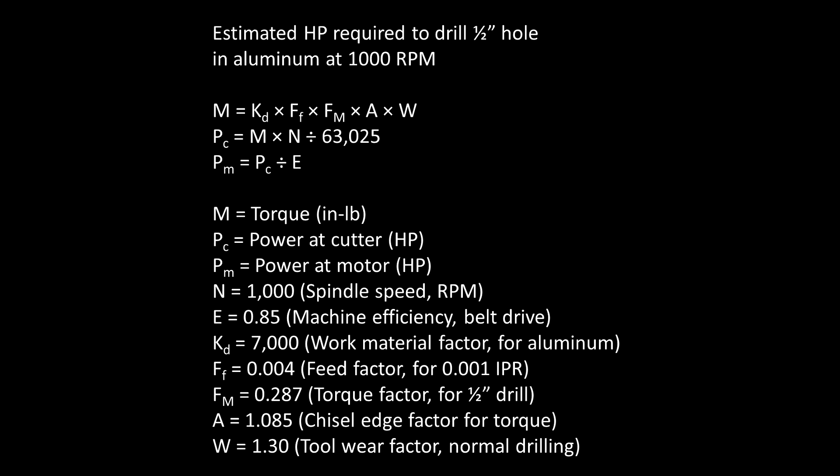We can estimate the horsepower necessary to drill a half-inch hole in aluminum at 1000 RPM. These equations and constants can be found in the machinery's handbook. While this method has been derived from the experiences of drill operators over decades, it is important to recognize this is still an estimate. We'll first estimate torque necessary, then power necessary at the cutter, and then power necessary at the motor. The constant of 63025 is the torque necessary to produce one horsepower in one revolution, and one horsepower was originally defined as the energy required to lift 33,000 pounds one foot in one minute. It was an estimate derived from experience with horses.